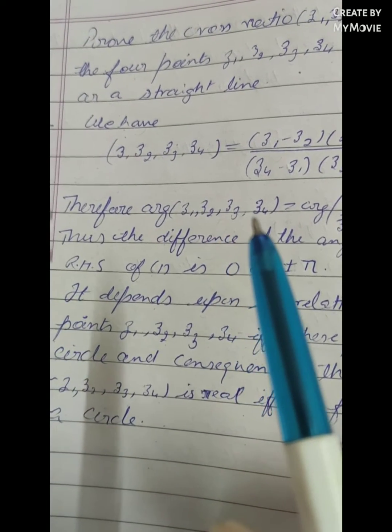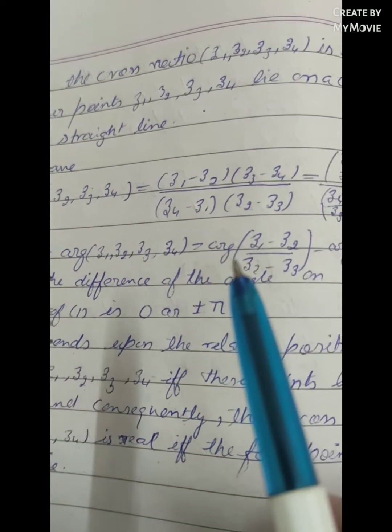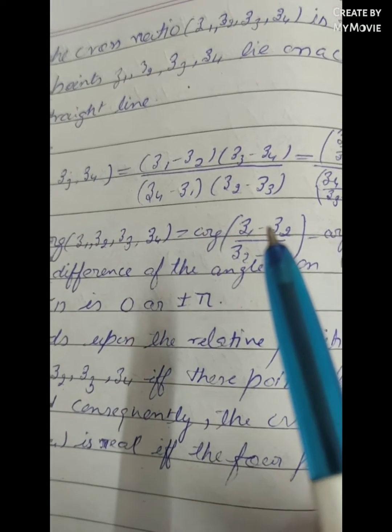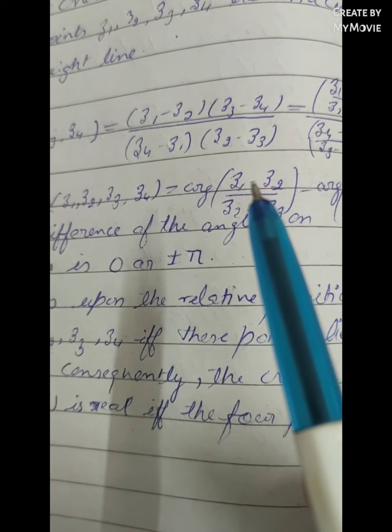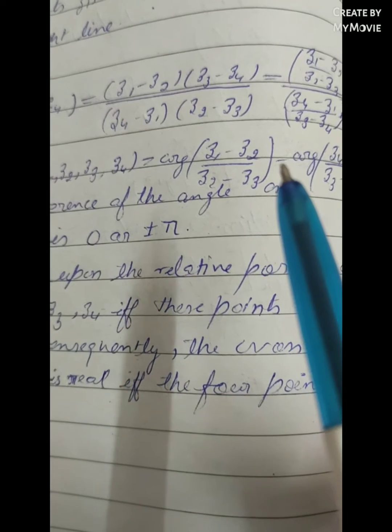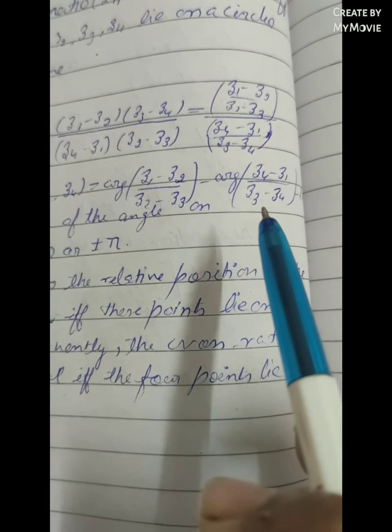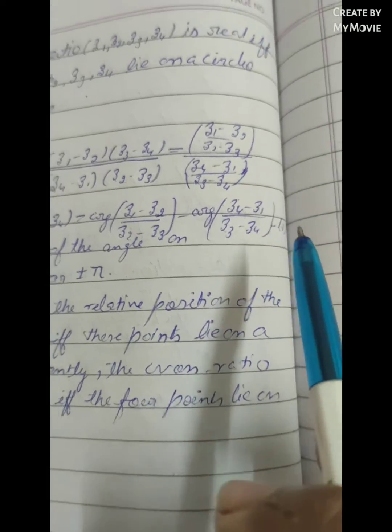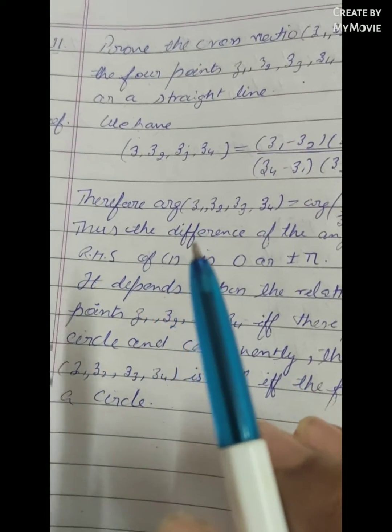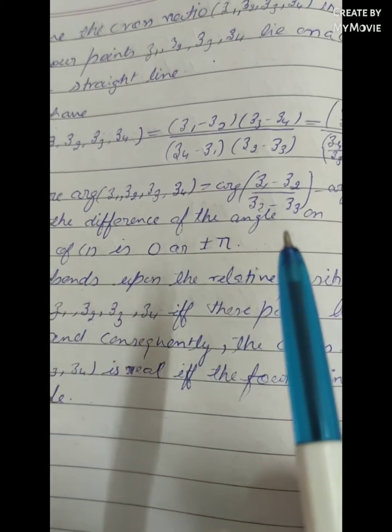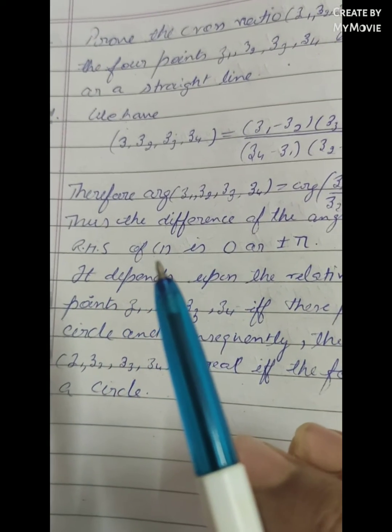Z2, Z3, Z4 is equal to argument of (Z1 minus Z2 upon Z2 minus Z3) minus argument of (Z4 minus Z1 upon Z3 minus Z4) which is equation 1. Thus the difference of the angles of right hand side of 1 is